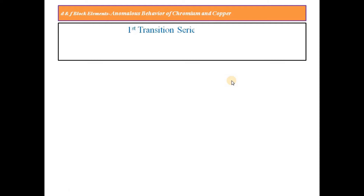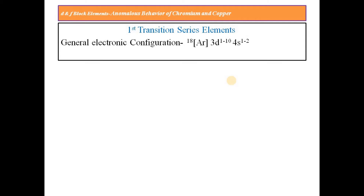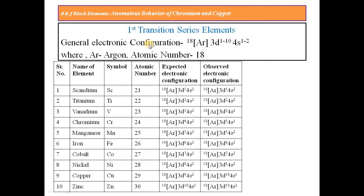We will look at the electronic configuration of Chromium and Copper, which belong to the first transition series, also known as the 3D series. Its general electronic configuration can be written as [Ar] 3D1-10, 4S2, where Ar represents atomic number 18. If you look towards all the elements which belong to the first transition series or 3D series, starting from Scandium (21) ending at Zinc (30), their expected and observed electronic configurations can be written as follows.